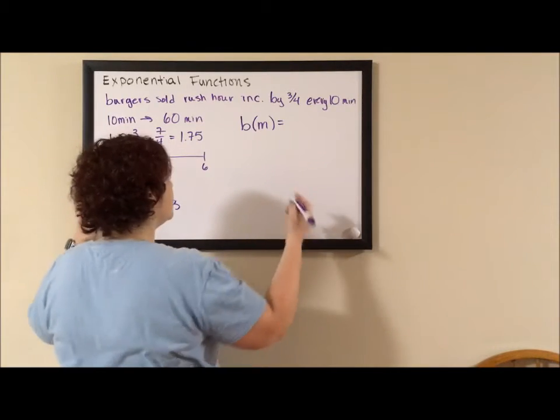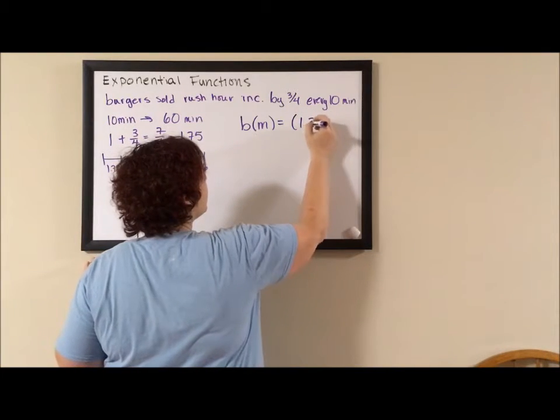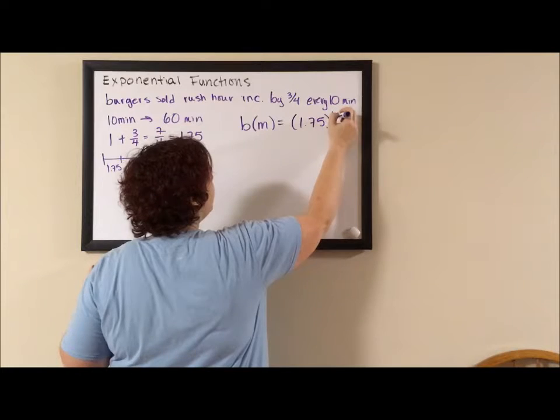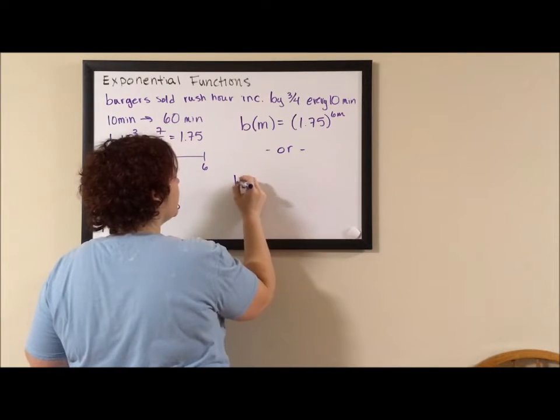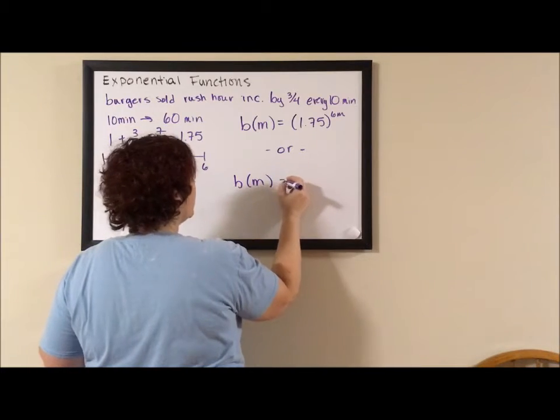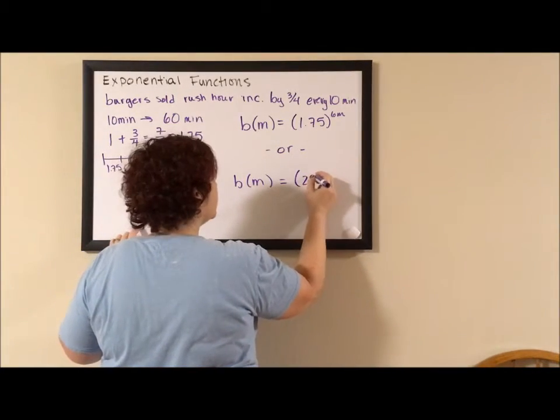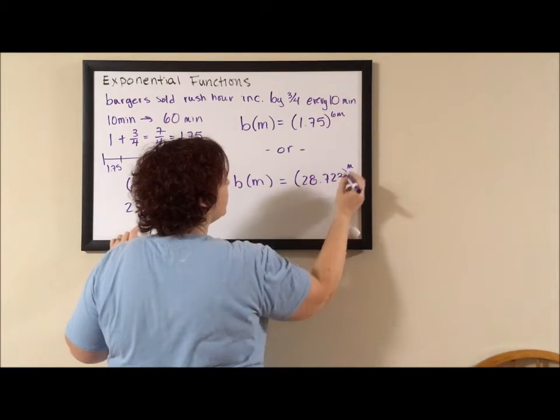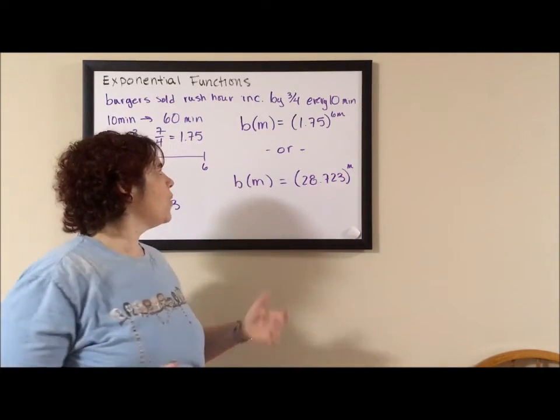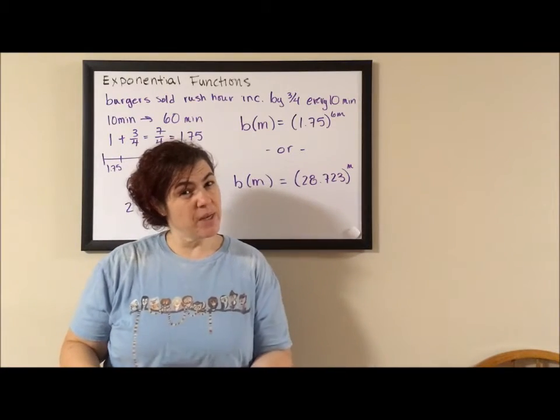We can either do the initial 1.75 to the 6m or if we're using our altered one, we would say b(m) equals 28.723 to the m. m should probably be h for hour because this is the hourly growth, not the minute growth.